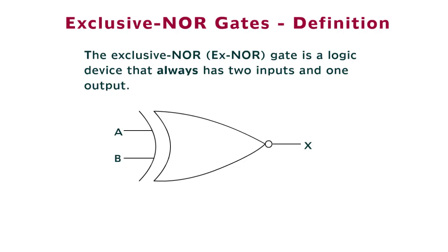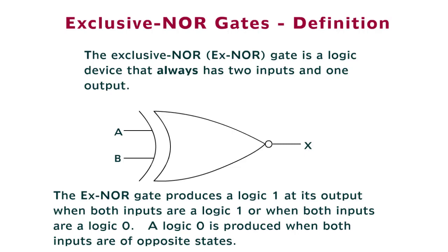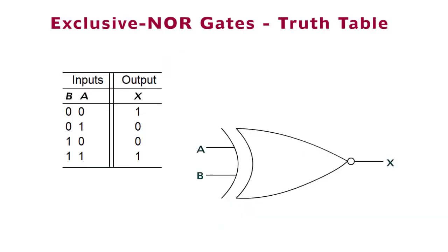The schematic symbol for this device is shown here. The X-NOR gate produces a logic 1 at its output when both inputs are a logic 1 or when both inputs are a logic 0. A logic 0 is produced when both inputs are of opposite states. Observe the changes in input and output states of the gate in the truth table and schematic symbol.